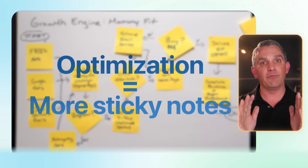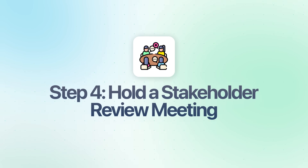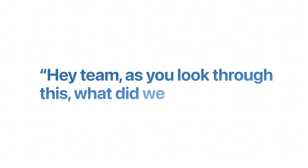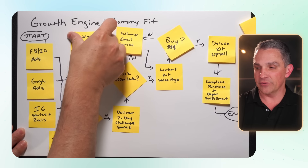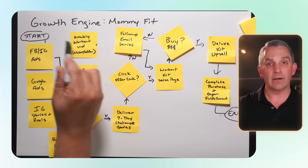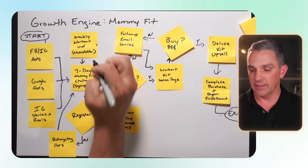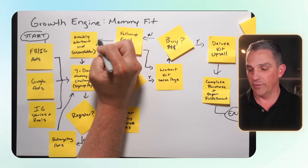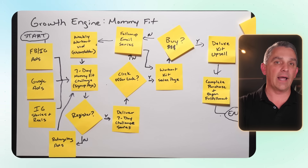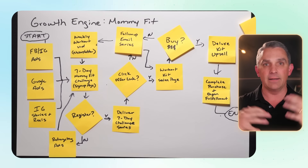Step four is to hold a stakeholder review meeting. The stakeholder review meeting basically means getting everybody involved in this process — typically people in marketing and sales teams for a growth engine, or on the product and services team for a fulfillment engine. You just want to ask them: hey team, as you look through this, what did we miss? In this case, the folks at Mommy Fit said: you forgot about the weekly workout videos — every single week we send out a newsletter with a new workout video, and that's also designed to drive awareness. People after the email follow-up series who don't buy are also added to this list. That's the important aspect of the stakeholder review meeting: you'll find the different pieces you may have missed.